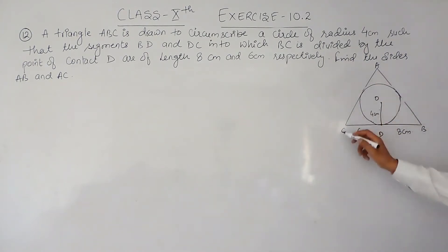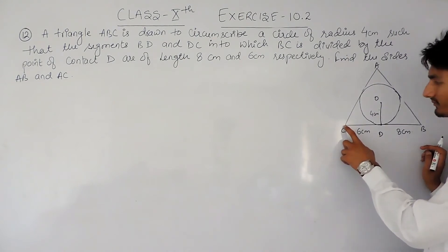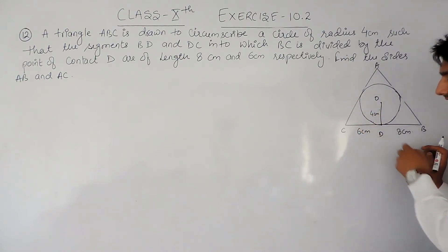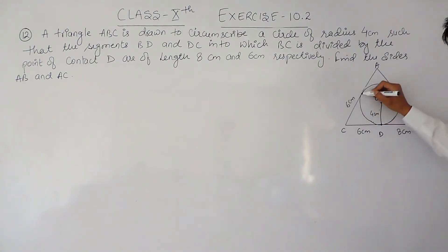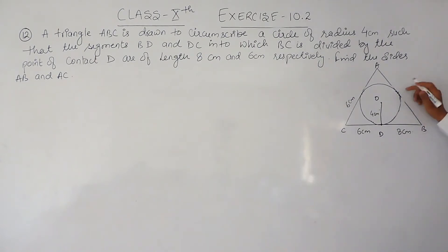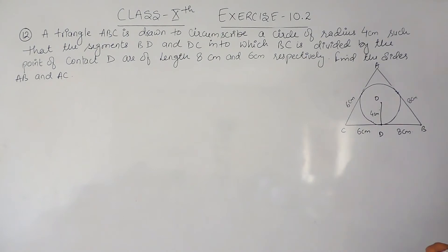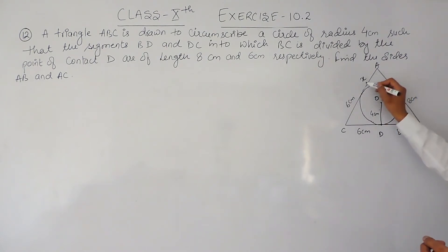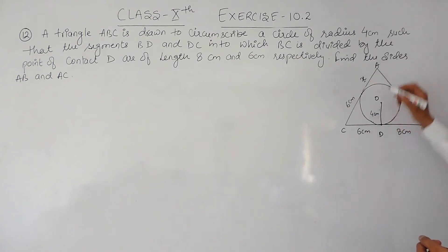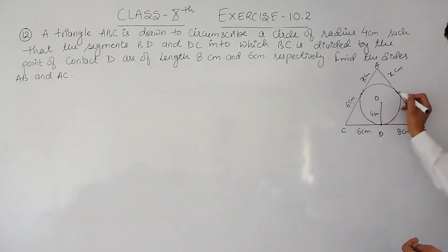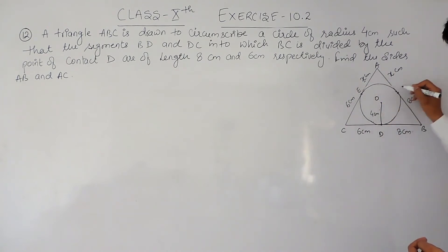We have to find the two unknown sides. Because B is an external point and two tangents are drawn from it, the lengths of both tangents must be equal, so BD equals BF equals 6 cm. Similarly, from external point C two tangents are drawn and are equal. From external point A, two tangents are drawn — let's call that length x cm. We name the other two points of contact E and F.